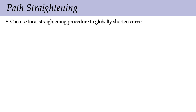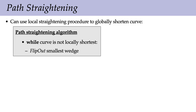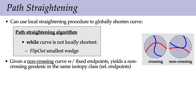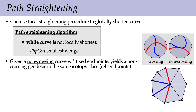From here we can use our local shortening procedure to globally shorten a curve. So far all we've said is how to make the curve shorter at a single vertex. To straighten out a whole path, we just say: while the curve is not locally shortest, flip out the smallest remaining wedge in the curve. Given a non-crossing curve with fixed endpoints, this gives us a non-crossing geodesic in the same isotopy class relative to its endpoints. By non-crossing, I mean the curve can touch itself, but we can still make an epsilon perturbation that makes it injective, which is useful for situations where we want a curve to make contact with itself at just a single vertex.